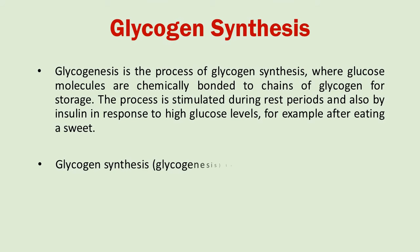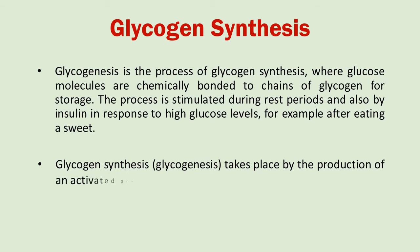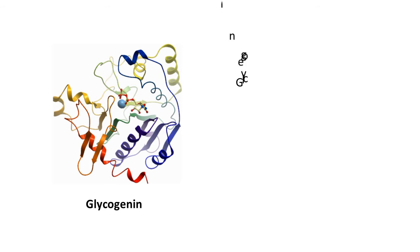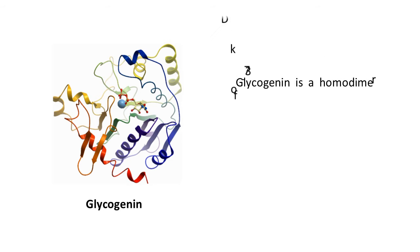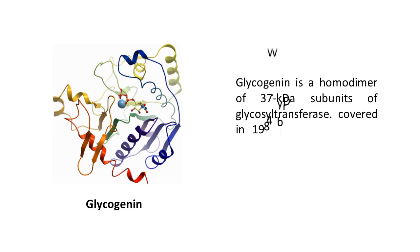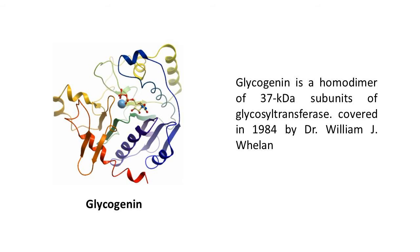Glycogen synthesis involves the creation of an activated precursor and then the linking of that precursor into a linear growing polymer. Glycogenin acts as a primer by polymerizing the first few glucose molecules, after which other enzymes take over. It is a homodimer of 37 kilodalton subunits and is classified as a glycosyl transferase. Glycogenin was discovered in 1984 by Dr. William J. Whelan, a fellow of the Royal Society of London and current professor of biochemistry at the University of Miami.